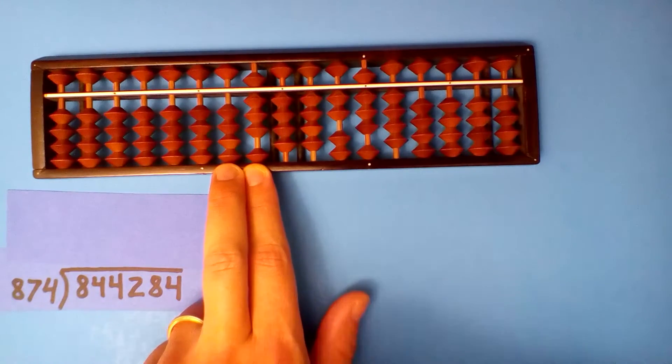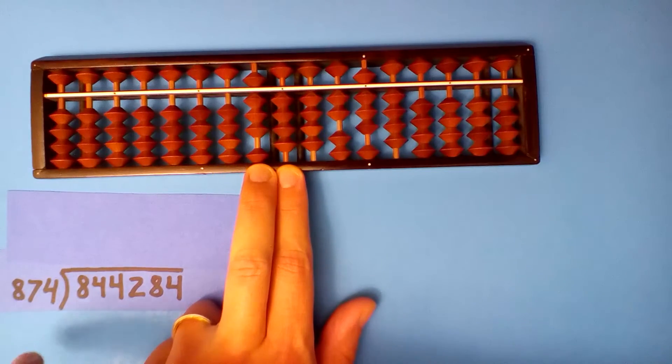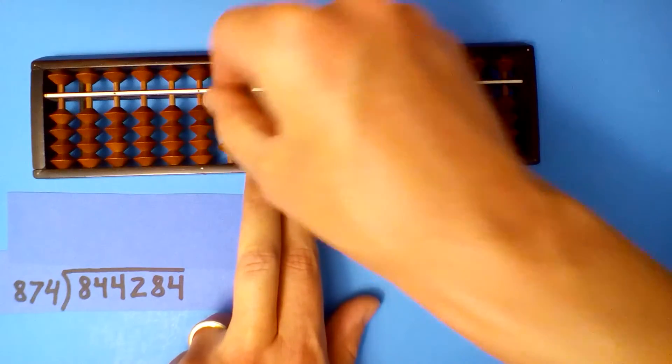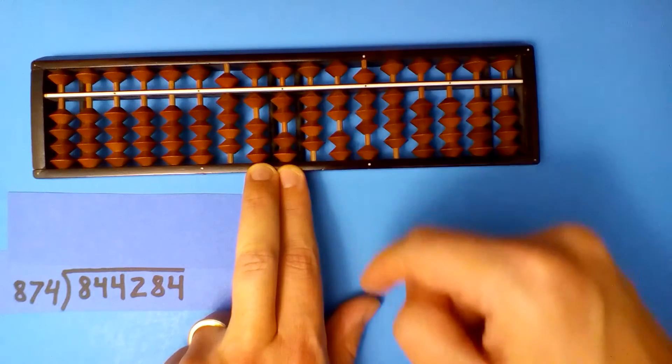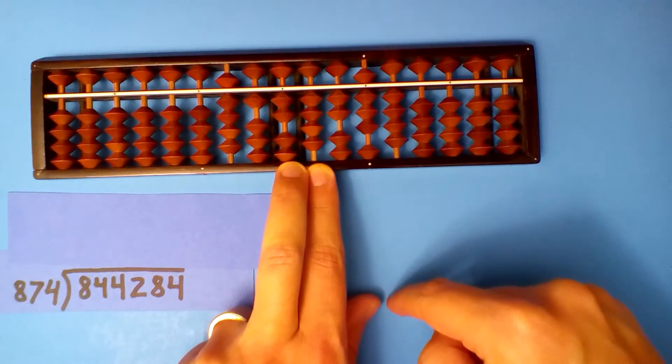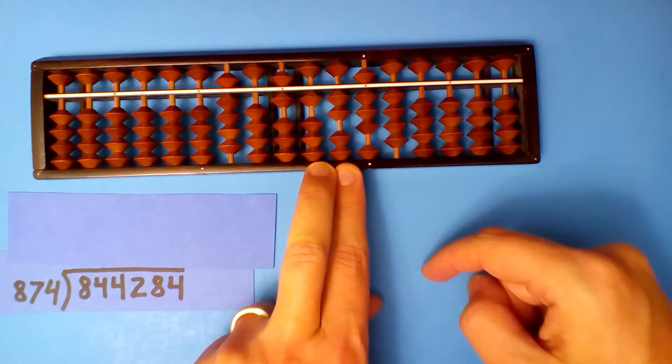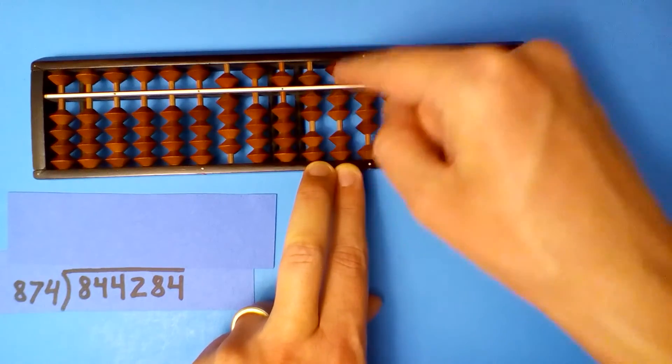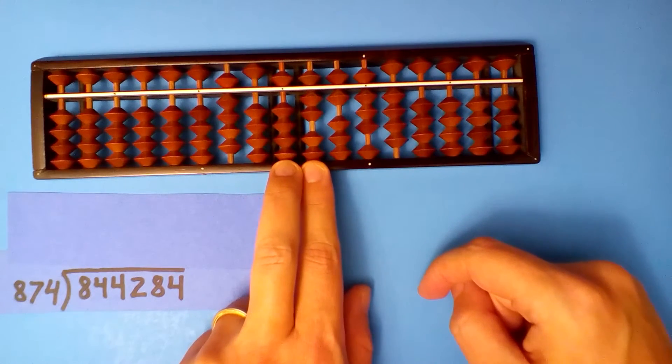8 goes into 8 once, but see, it's really 8.7, so that's not going to work. How about 8.7 into 84? Nine times. 9 times 8 is 72, 9 times 7 is 63.